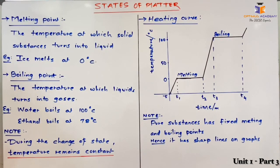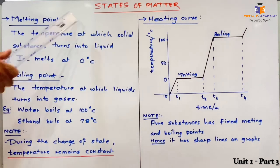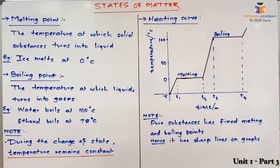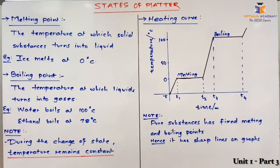Hello dear students, in this video about states of matter we are going to discuss melting point, boiling point, and heating curve. In the previous video we discussed changes in states of matter, wherein we mentioned that change from solid to liquid is called melting. Now, how much energy do I need to provide to a substance so that it starts melting? For that I need to take into consideration the melting point of the substance.